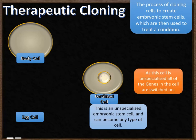Because it's a stem cell, it's unspecialized — all of the genes inside the cell are switched on. And that means it can become whatever type of cell you need it to.